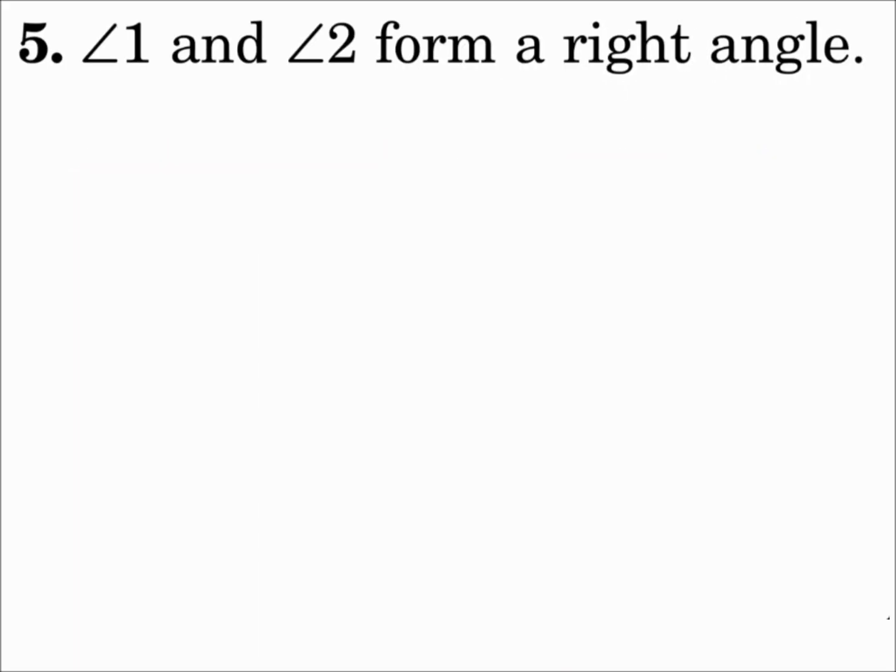Number 5: Angle 1 and angle 2 form a right angle. Well, if angles form a right angle, then they're complementary. So I'll make the conjecture that angle 1 and angle 2 are complementary. You might also say angle 1 is congruent to angle 2, or that angle 1 and angle 2 are adjacent, or that they share a vertex. There are lots of conjectures you can make, lots of correct answers. The conjectures may or may not be true, as long as they're directly related to the situation.